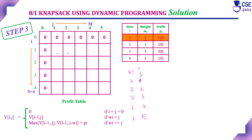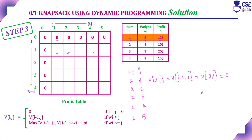When j=1 and weight is 2, adding this weight would exceed the remaining capacity. So we apply V(i−1, j): V(1,1) = V(0,1) = 0. So the value at position V(1,1) is 0.